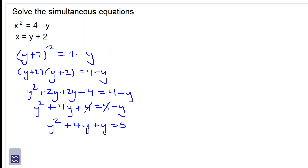So we'll have y squared plus 4y plus y is equal to 0. So y squared plus 4y plus 4y plus y will be simplified. So y squared plus 5y is equal to 0.